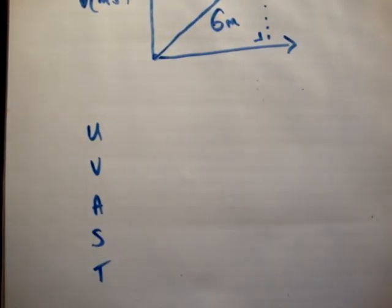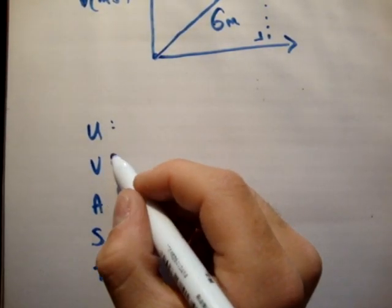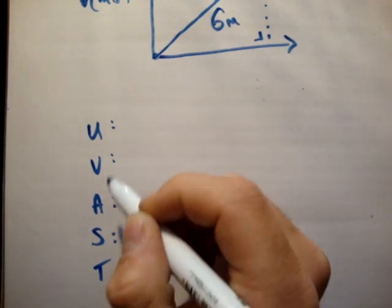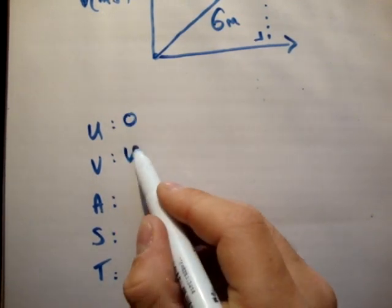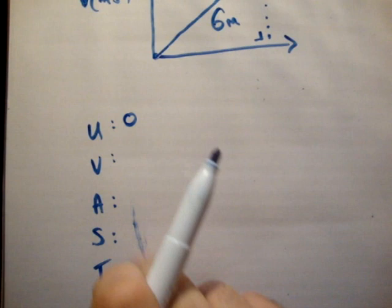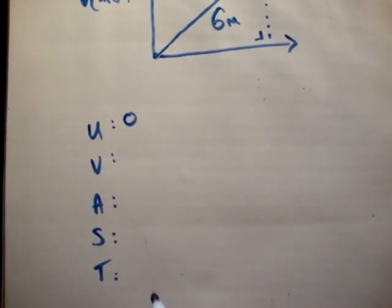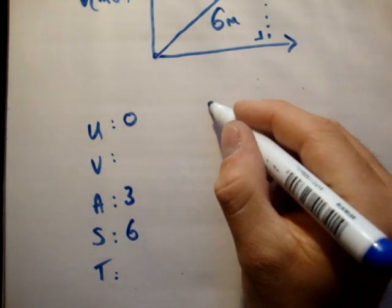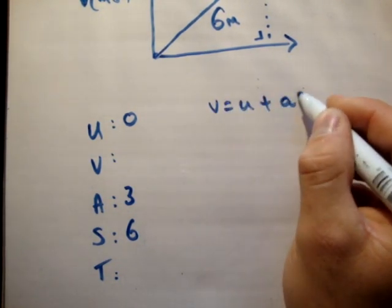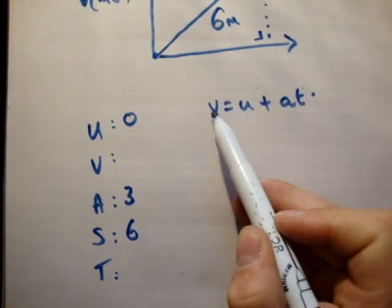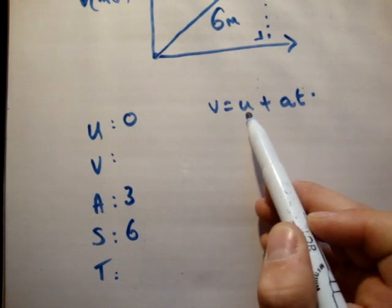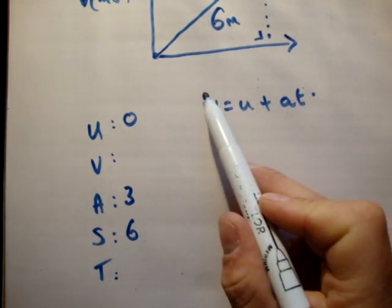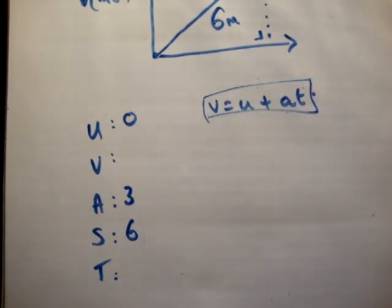What do we know? We know that u is equal to 0, v we don't know, the acceleration is 3 meters per second squared, the distance is 6, and the time we're not given. Can we use v equals u plus at? We don't know v and we don't know t — two variables missing — so we can't use that.